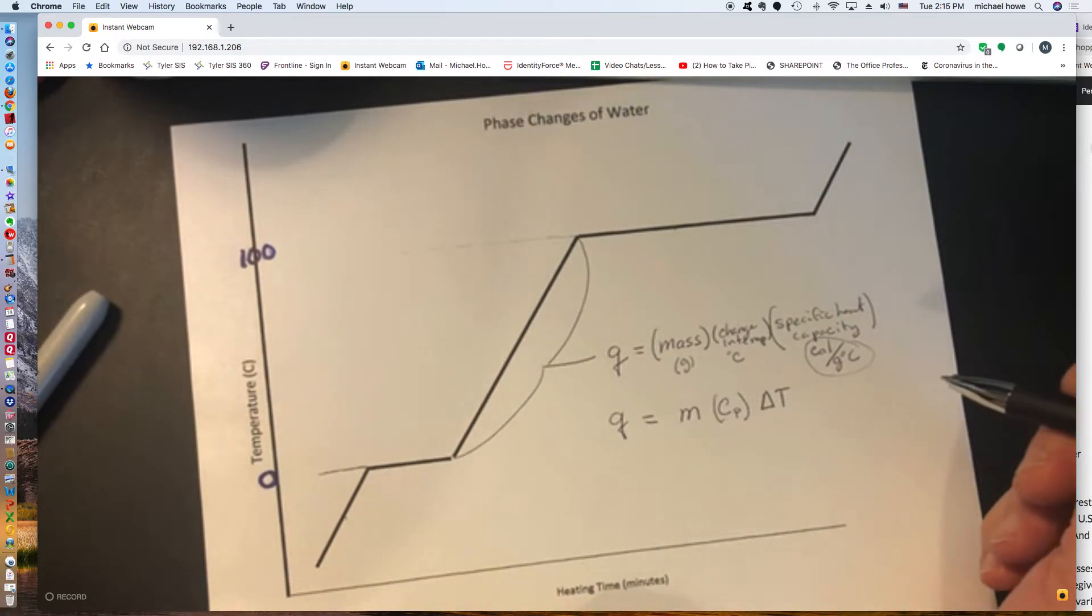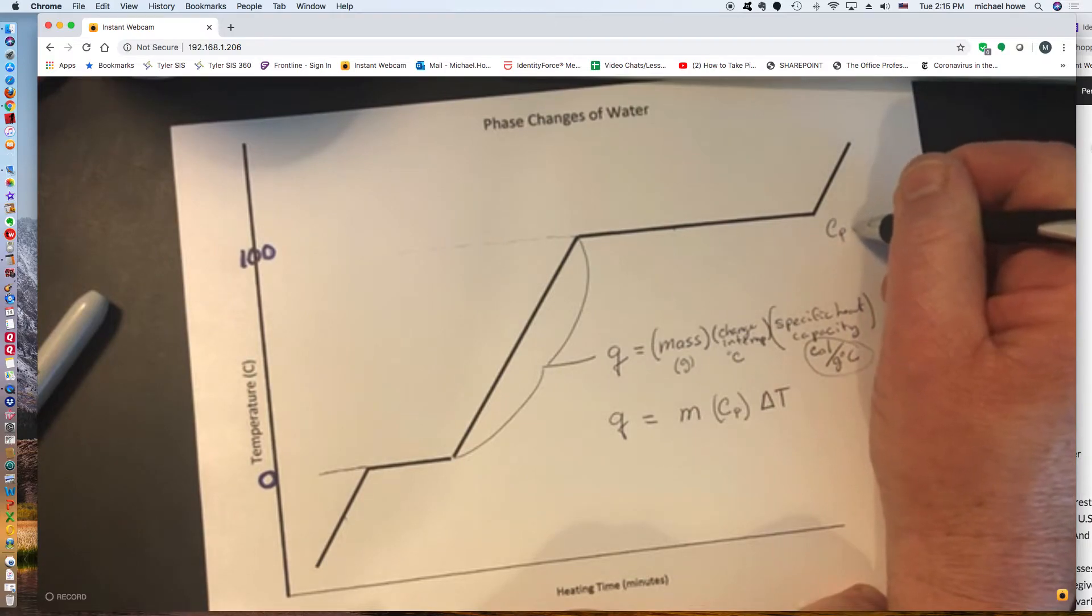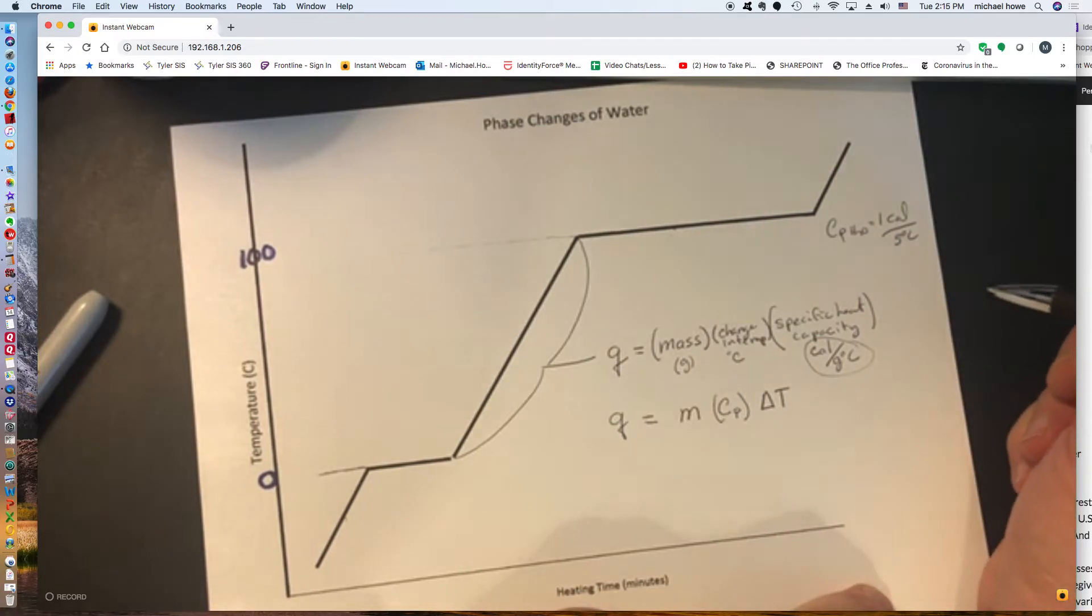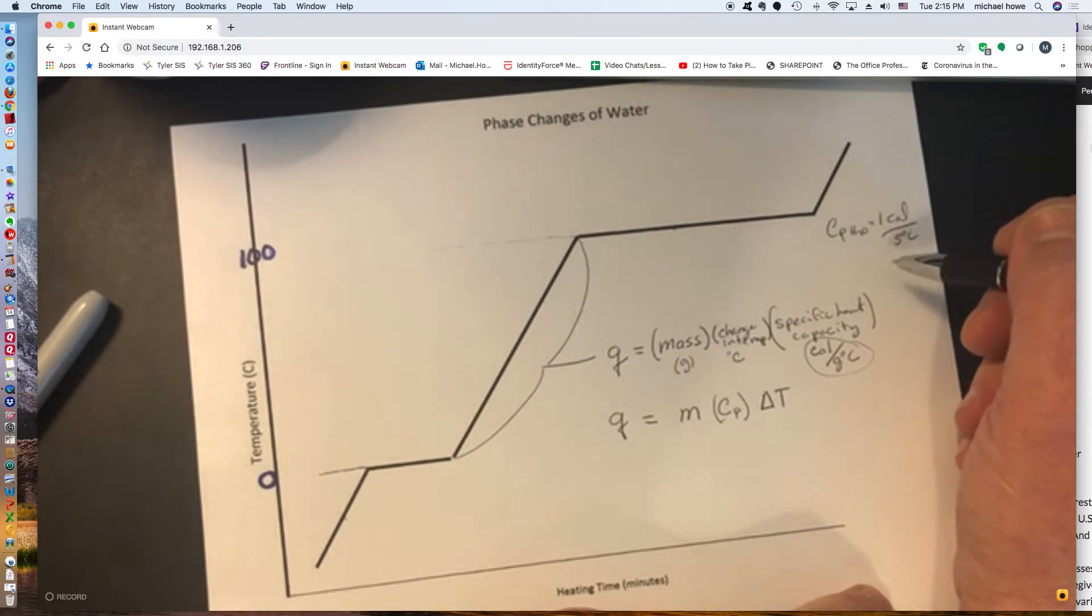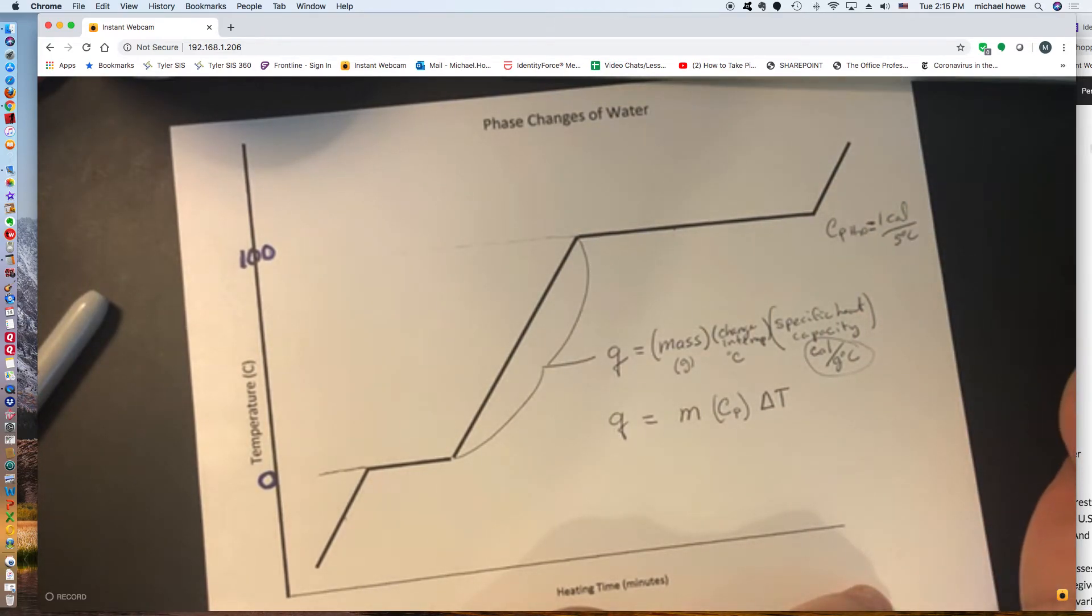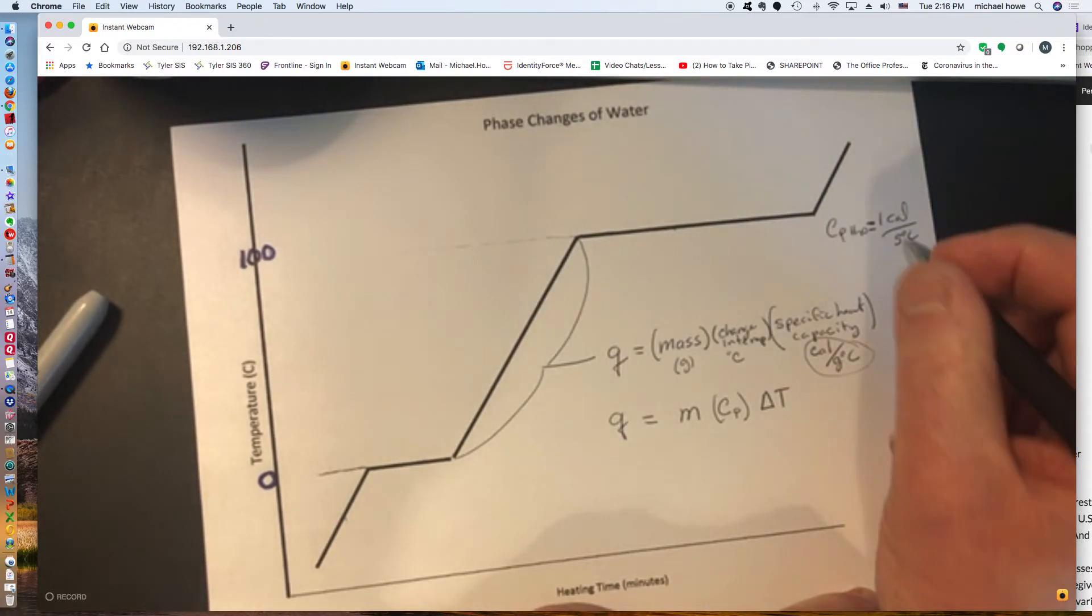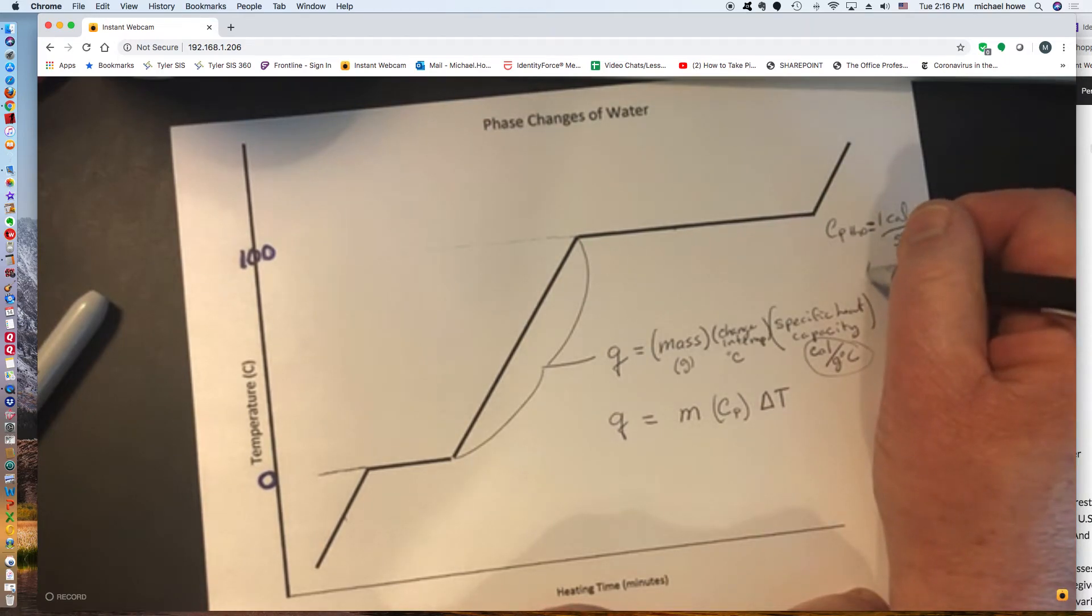Now water happens to have a specific heat capacity of one calorie. So Cp of H2O equals one calorie per gram degree C. If it wasn't water, it might have a different specific heat capacity. But for water, that's what it is. And by the way, that's the definition of a calorie. It's the same kind of calories that we talk about in food, except that food calories are 1,000 calories or a kilocalorie.